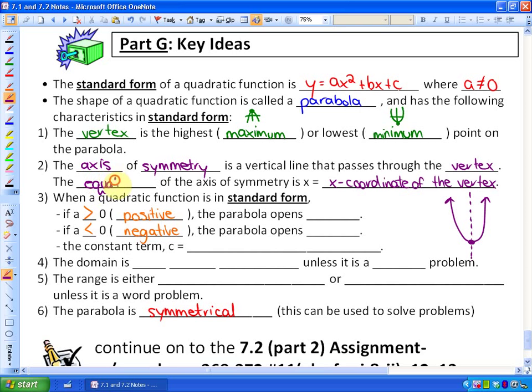The equation of that axis of symmetry is always x is equal to the x-coordinate of the vertex. So if this vertex was, say, 2, 4, then the equation of the axis of symmetry would be x equals 2. So it's always the x-coordinate of the vertex.